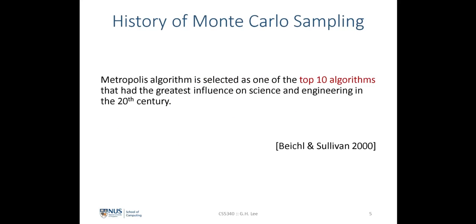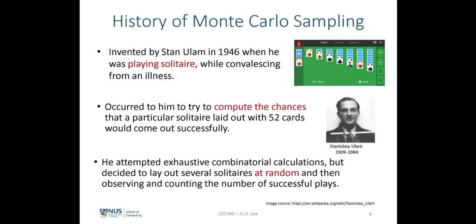Before going into the details, let me give a brief history of the algorithm. Interestingly, the Metropolis algorithm was selected as one of the top 10 algorithms with the greatest influence on science and engineering in the 20th century. The first version of the Monte Carlo sampling algorithm was invented by Stan Ulam in 1946, while he was playing the card game of solitaire at home while recovering from an illness.